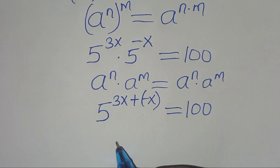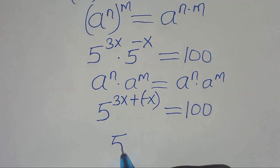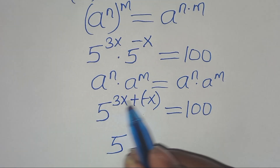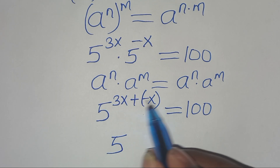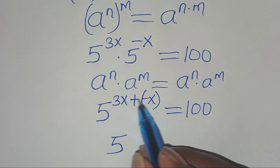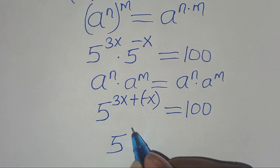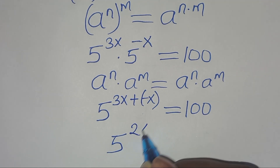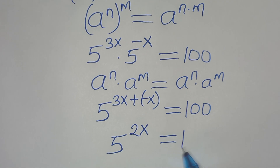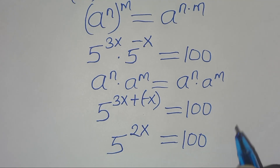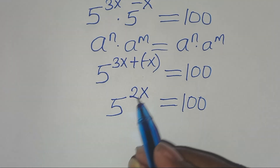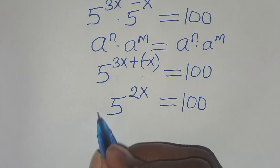Simplifying the exponent: 3x plus minus x is 3x minus x, which equals 2x. So we have 5 to the power of 2x equals 100. To solve for x, we introduce logarithm on both sides.